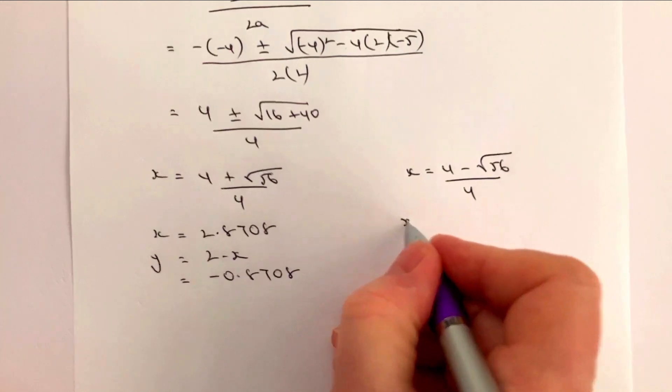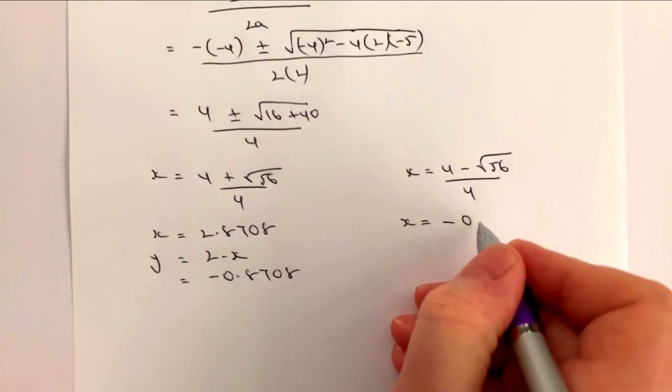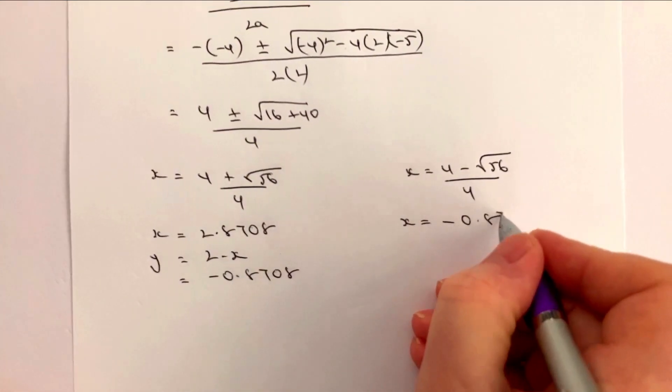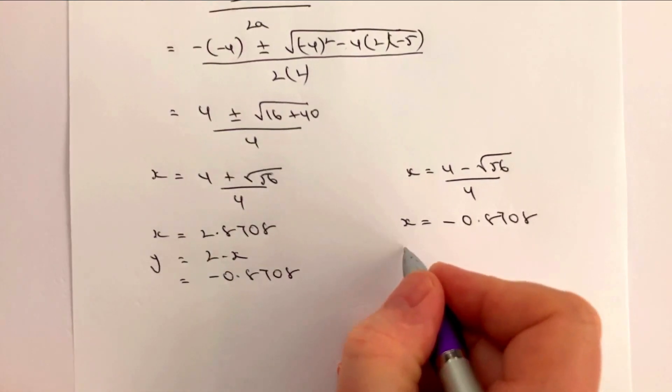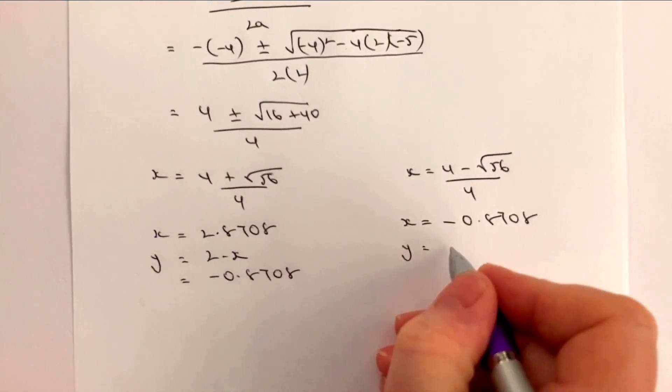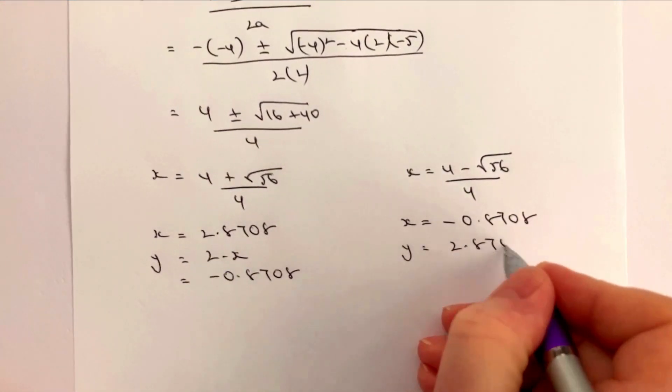Okay, with this one I'm going to get x equals minus 0.8708, and then when I substitute for y I get y equals 2.8708.